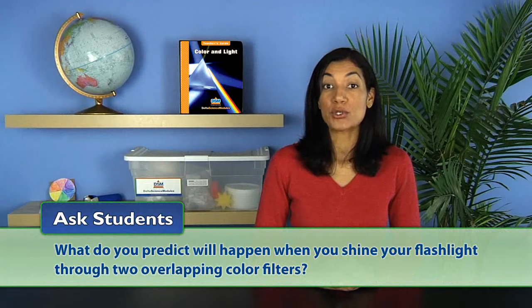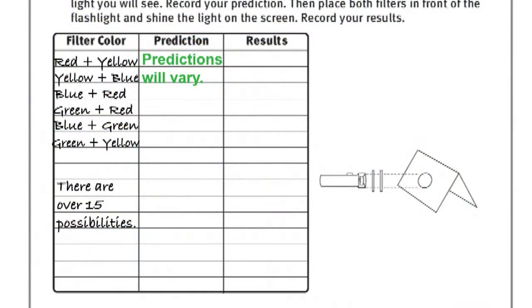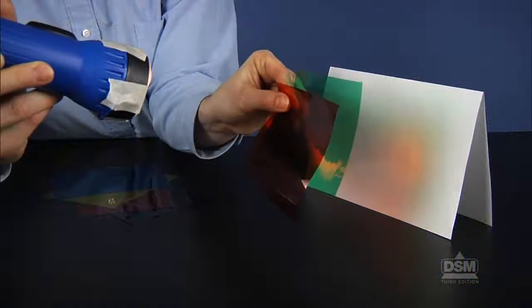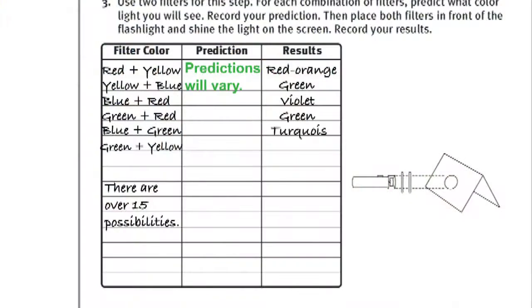Then ask students, what do you predict will happen when you shine your flashlight through two overlapping color filters? Have students record their predictions in the second chart on their activity sheets. Darken the room again and allow students to experiment with combinations of two overlapping filters and remind them to record their results.